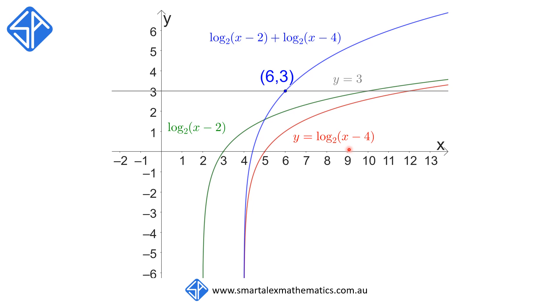Then when we solve for the equation, log base 2 of x minus 2 plus log base 2 of x minus 4 is equal to 3. Essentially, what we're doing is solving for the point of intersection of the blue graph and the horizontal line y is equal to 3. And this occurs when x is equal to 6, which is our solution.